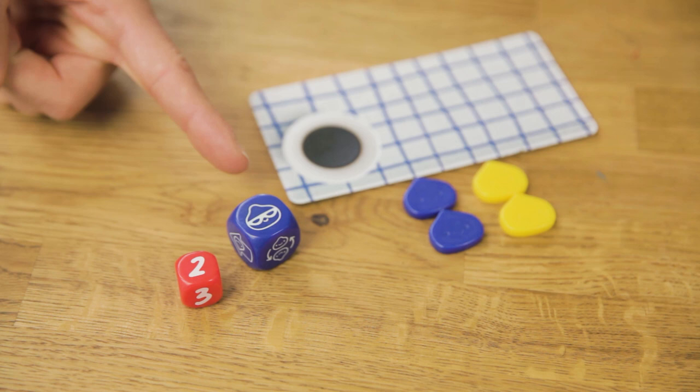Finally the player with the large dice resolves their action. This one means the player can steal a bun from someone else.